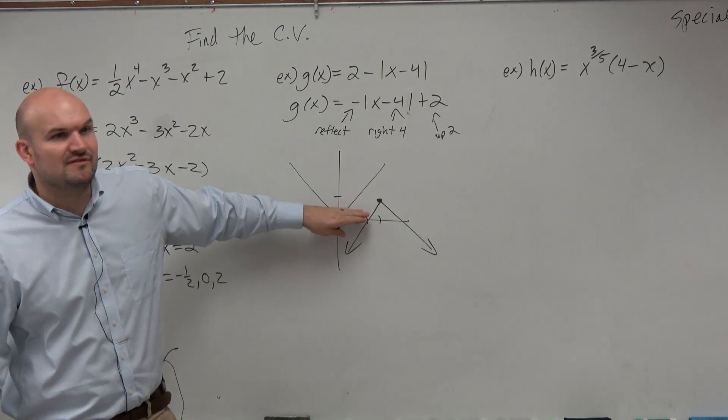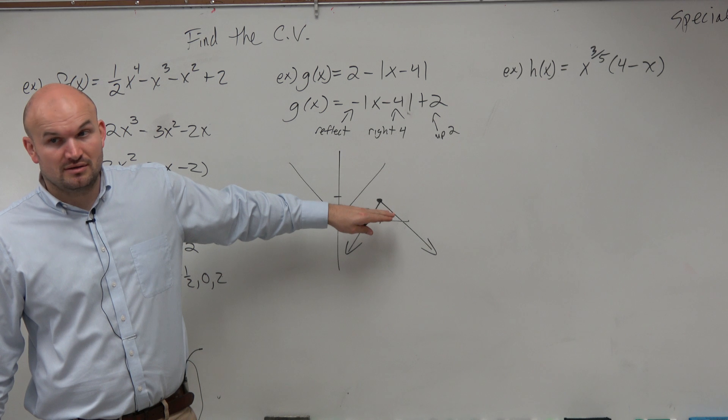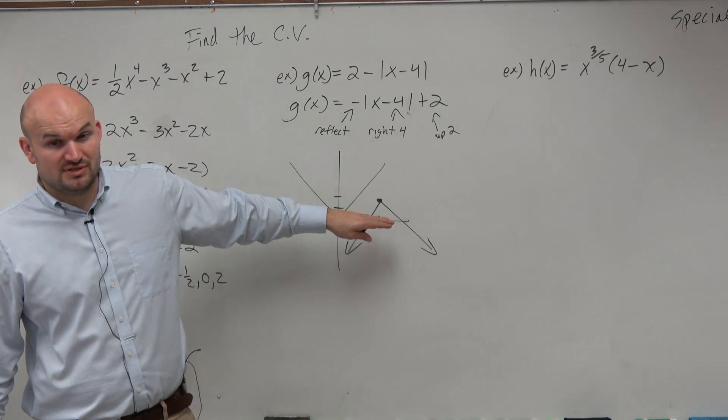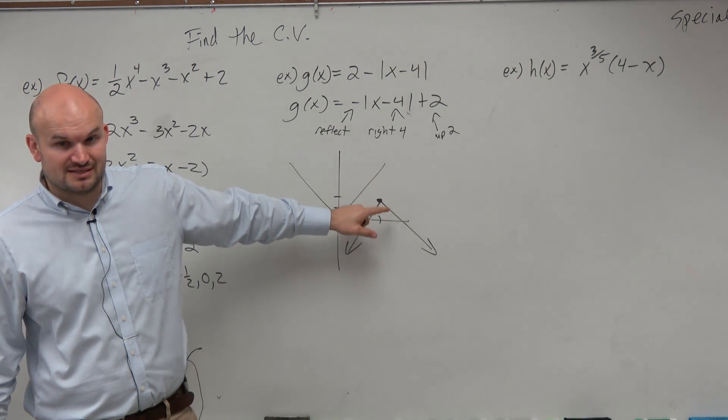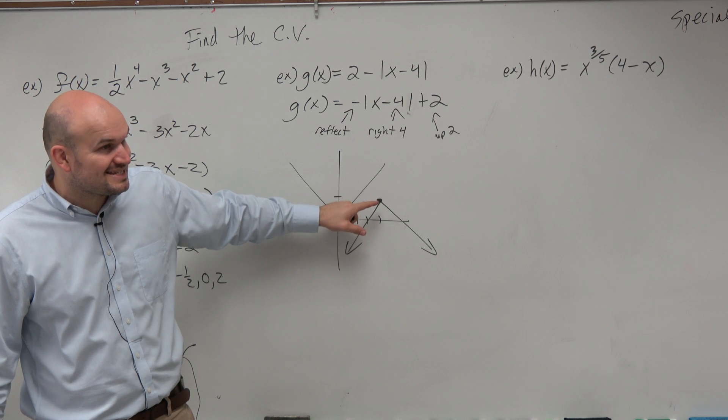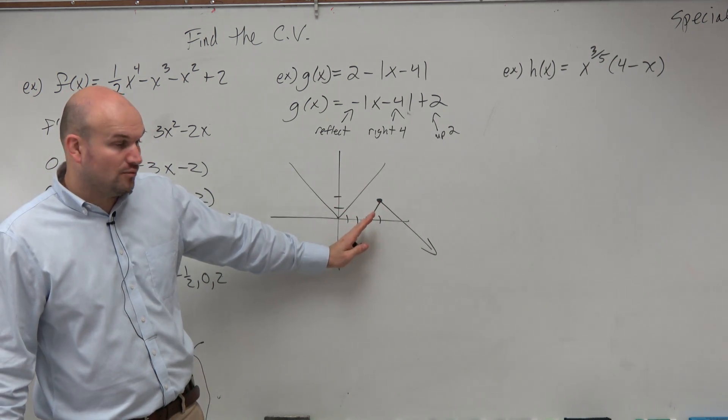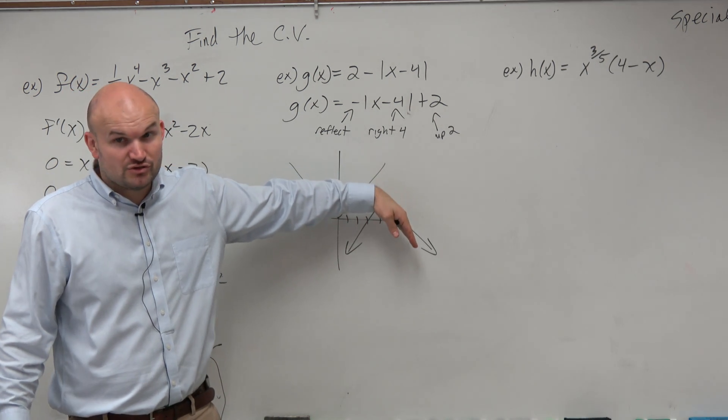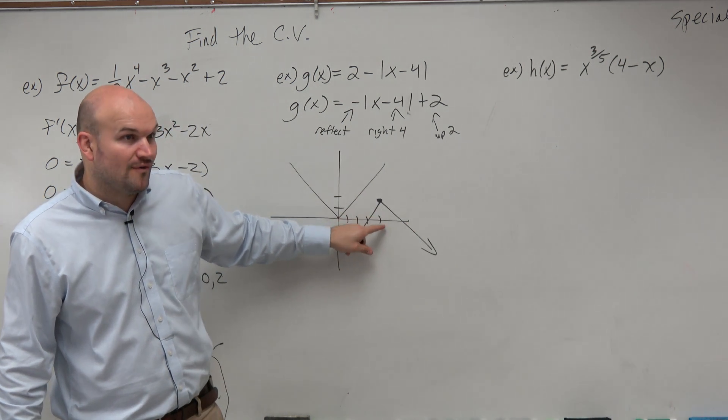Is this graph going to have a horizontal tangent ever? No, it's never going to have a horizontal tangent. The derivative is not going to equal 0 because the derivative does not exist. The derivative here is like 1, here it's like negative 1. The derivative does not exist at the point 4.